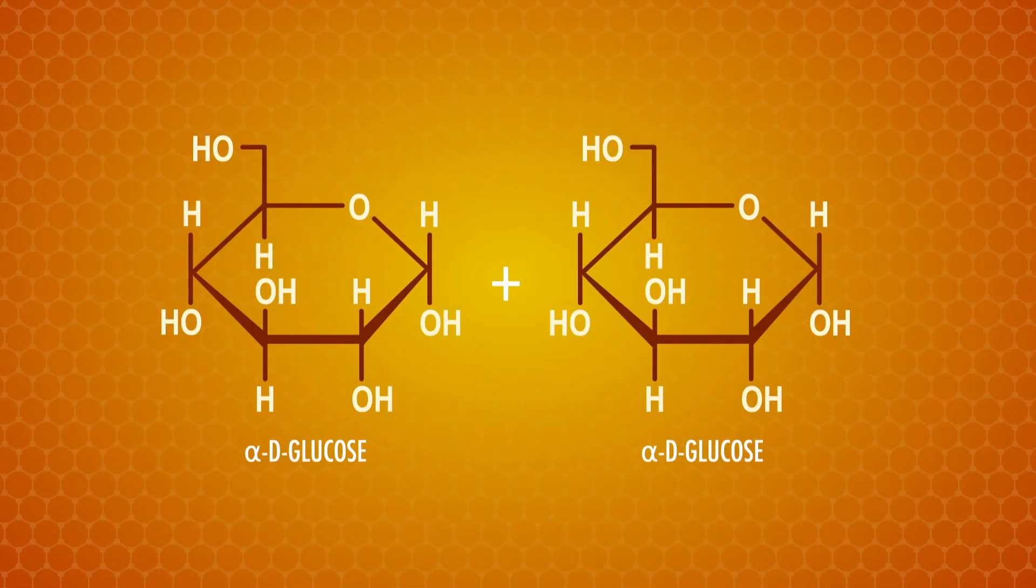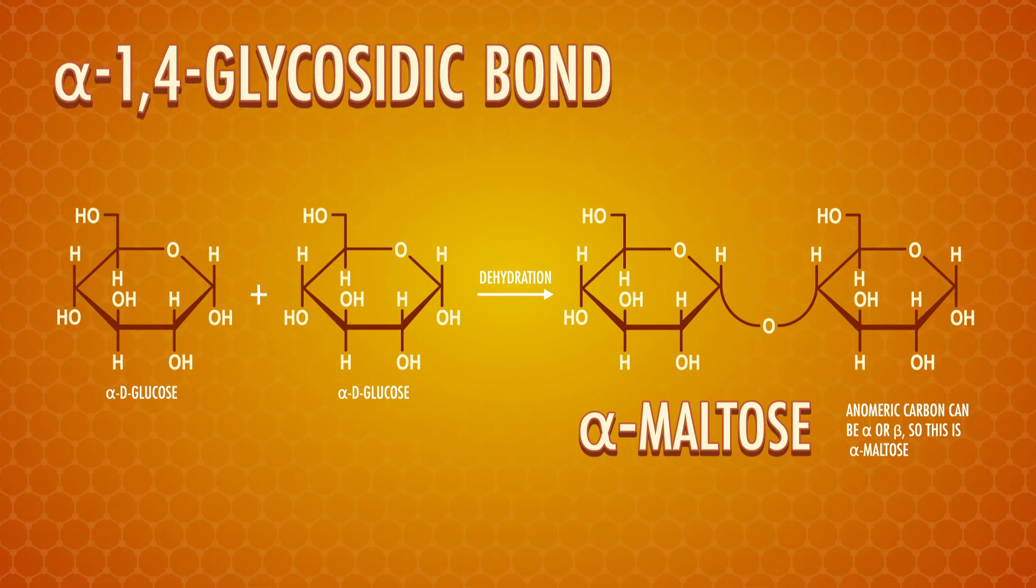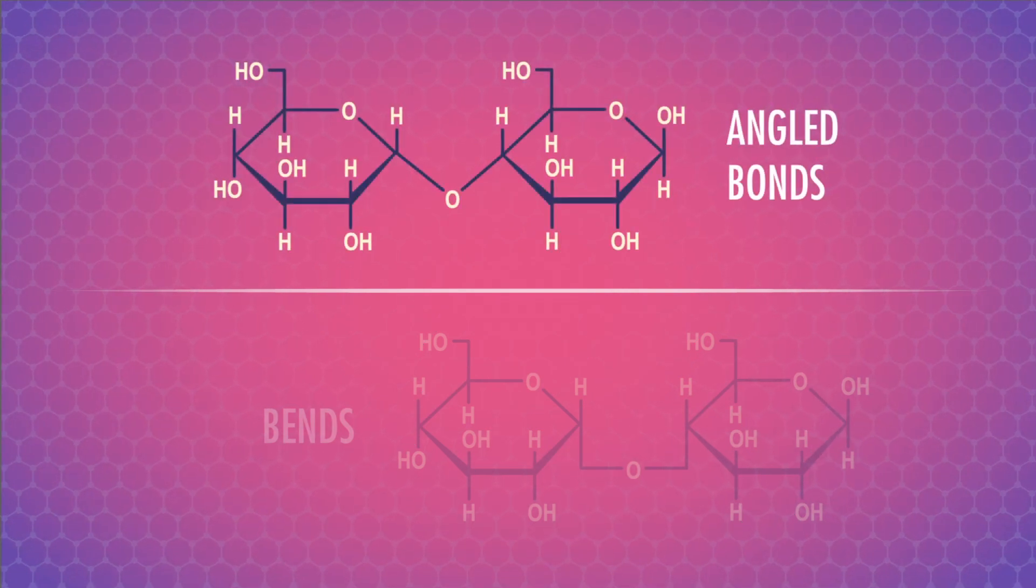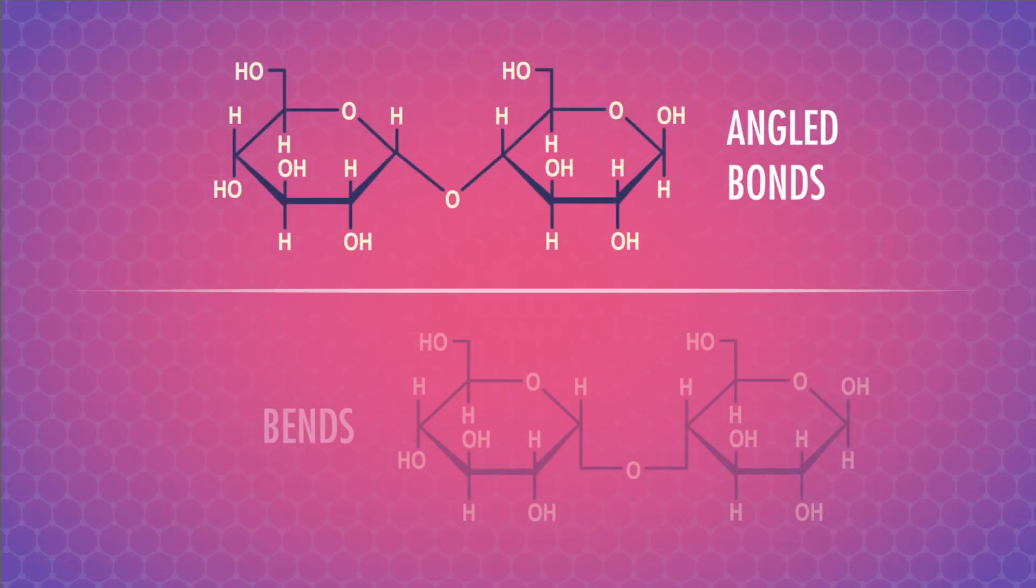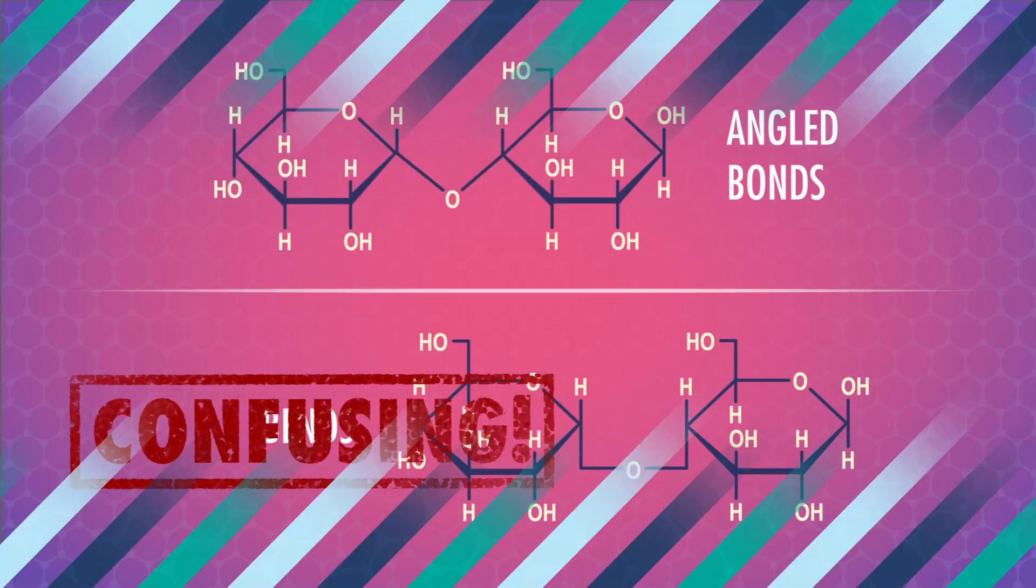When two glucose molecules link up, we get maltose. The linkage here is an alpha-1,4 glycosidic bond, which I like to show with these curved lines. Sometimes you'll see slightly angled bonds in the drawing, and sometimes full-on bends. But that can be confusing and look like extra carbons.